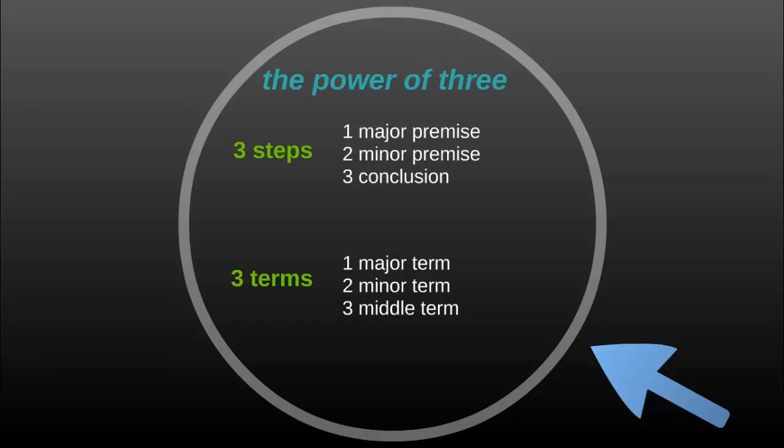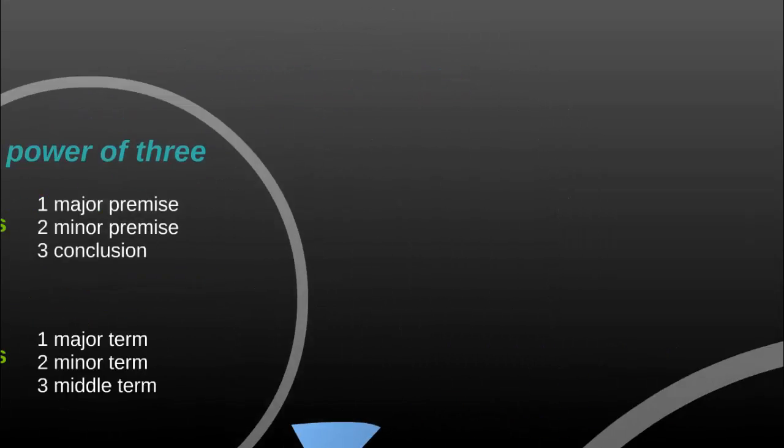When working with categorical syllogisms, it's always important to remember the number three. There are three steps in each categorical syllogism and three terms. There's a major premise, a minor premise, and a conclusion — and a major term, a minor term, and a middle term.